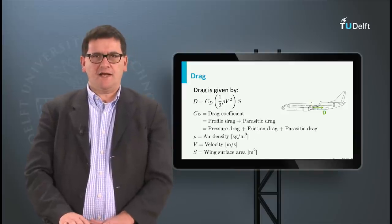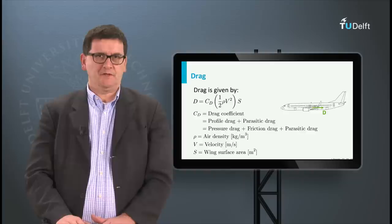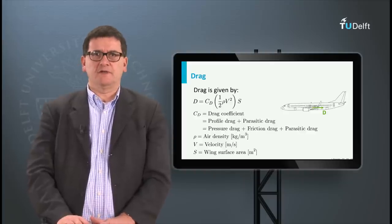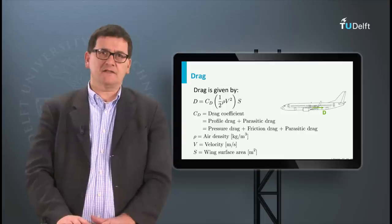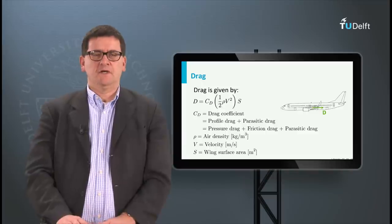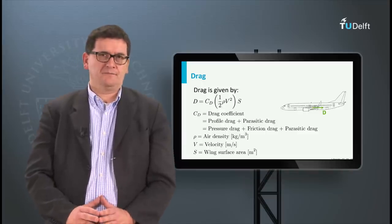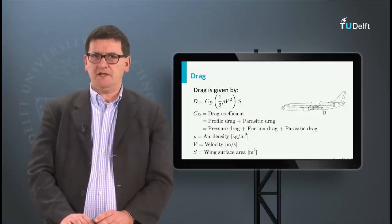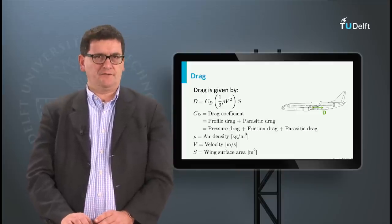For the drag we have a similar formula. The only differences are that the lift force L is replaced by the drag force D and that the lift coefficient is replaced by the drag coefficient. The structure of the formula is the same. Also this coefficient is dimensionless and the other variables have the same meaning as in the equation for the lift.